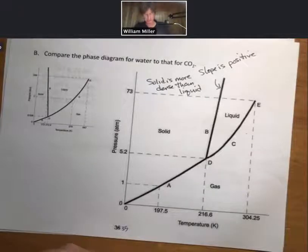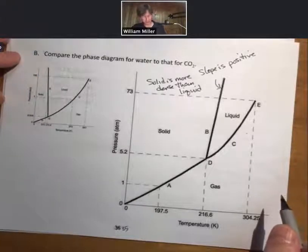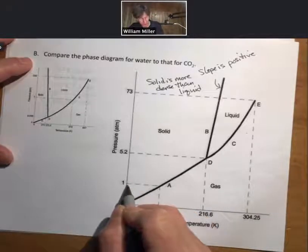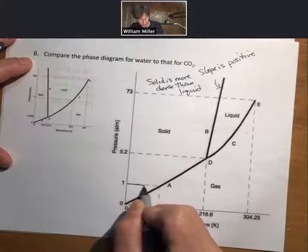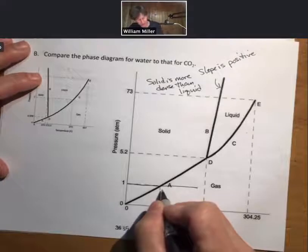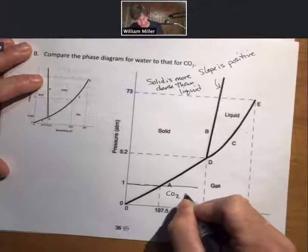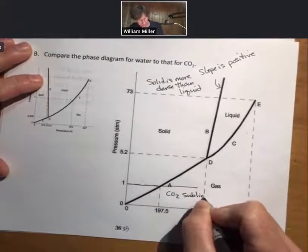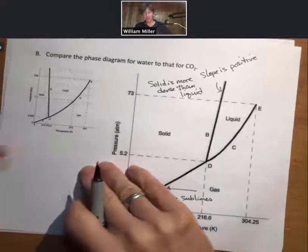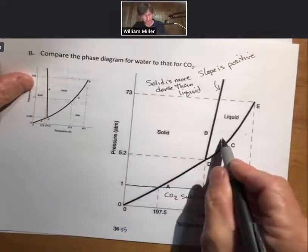All right, so we're comparing to the phase diagram for CO2. We can see that one atmosphere is down here. So if we were to do the heating curve for CO2, it would go straight from the solid to gas phase. It will only cross the solid to gas phase. And that's why CO2 sublimes. However, if we wanted to do CO2 at higher pressures, we could get it to go from solid to liquid to gas.